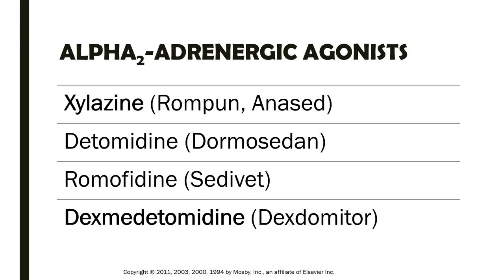The alpha-2 adrenergic agonists used in veterinary medicine include silocene. It is commonly used, with the brand names Rumpun and Anacet. Silocene is mainly used in large animals, and it is our alpha-2 agonist especially in cattle.